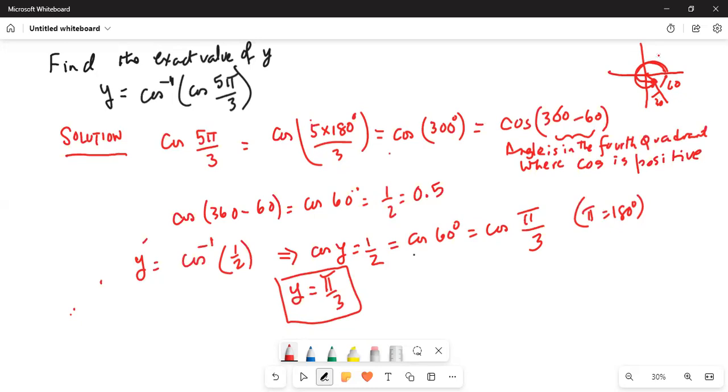So, cosine of 300 will be cosine 360 degree minus 60 degree. So, I am going in this direction, 360 degree minus 60. So, I am interested in this angle. Now, in the fourth quadrant, we know it is all sine, tangent and cosine. So, cosine is positive in the fourth quadrant. So, cosine 360 degree minus 60 is same as cosine 60, which is half, which is 0.5.